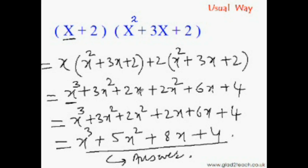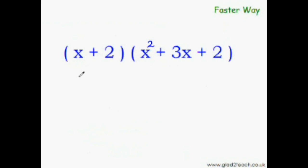To multiply a binomial with a trinomial the faster way, we will be using the same technique that we use to multiply a binomial with a binomial, with just slight modification. Like we always do, multiply the first term with the first term to get the first term of our answer.